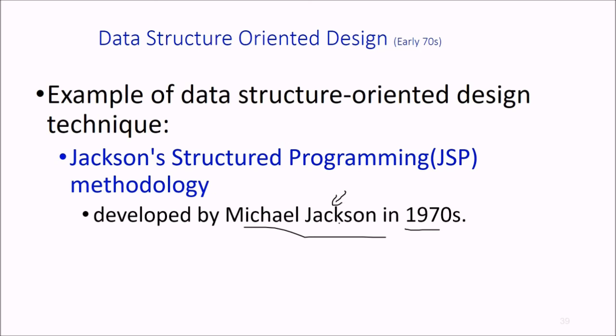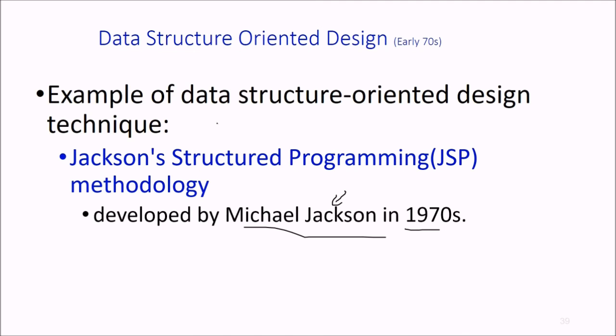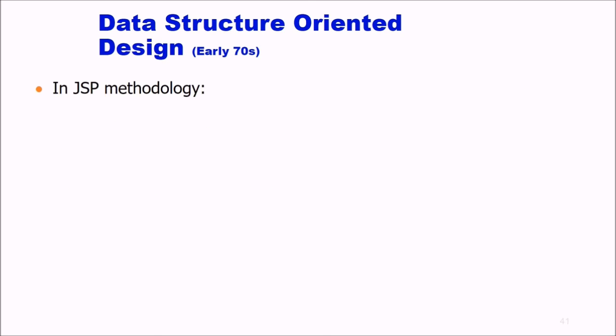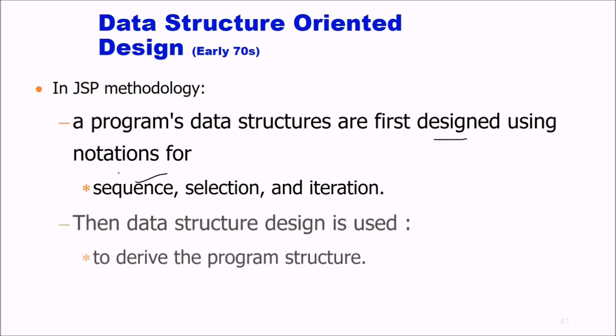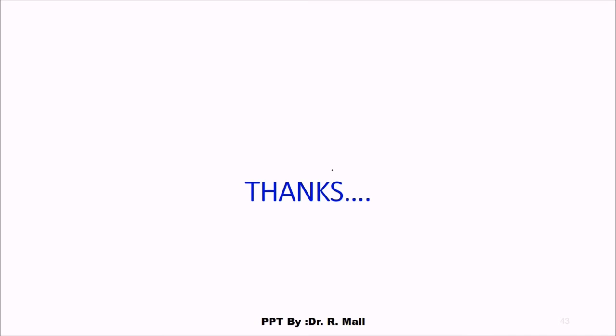In data structure-oriented design (JSP), the program's code structure should correspond to the data structure. In JSP methodology, a program's data structure is first designed using notation for sequence, selection, and iteration. Then the data structure design is used to derive the program structure. Several other data structure-oriented methodologies also came into existence, like the Warnier-Orr methodology.